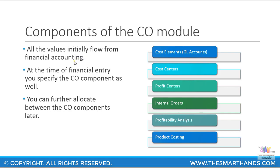Generally, all values initially flow from financial accounting to the CO module via GL accounts. Every entry in your CO module can be tied back to your financial accounting module. Unless you have entries flowing within your CO module itself, those may be separately held in CO. However, via the GL account you can always reflect back to your financial accounting as the original point of entry. For example, if an expense is initially posted at one cost center, it's reflected in both FI and management accounting. You can later transfer that expense from one cost center to another, which is then a transaction within the CO module itself.